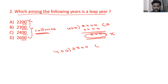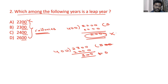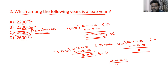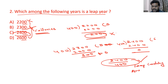Now consider 2300. Divide by 400: 400×5=2000, remainder 300. It is not equal to 0, so 2300 is also not a leap year. Now consider 2400. Divide 2400 by 400: 400×6=2400, remainder 0. So 2400 is divisible by 400, therefore 2400 is a leap century. That is the correct answer.